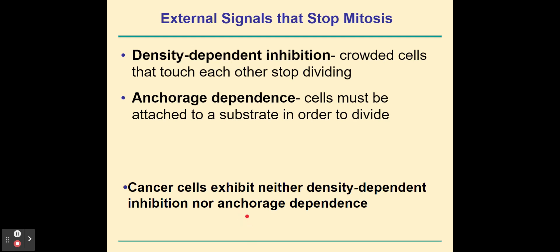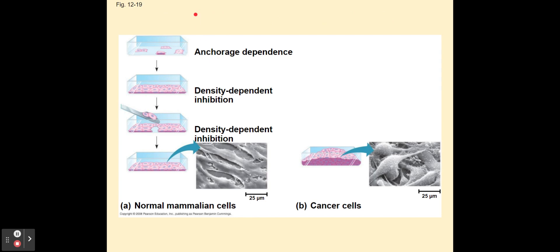Cancer cells will continue to divide and form a tumor or mass. This illustration shows anchorage dependence: a cell not attached to a substrate generally won't divide. If some cells are removed, normal cells fill in only until they touch — that's density-dependent inhibition, which takes place in normal mammalian cells. But cancer cells don't follow those rules and continue dividing, forming a mass or tumor.